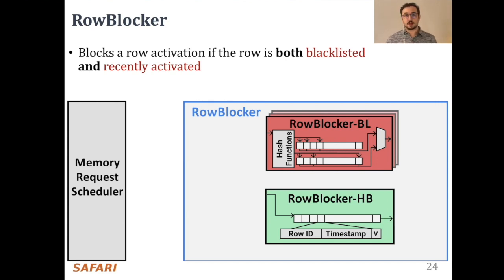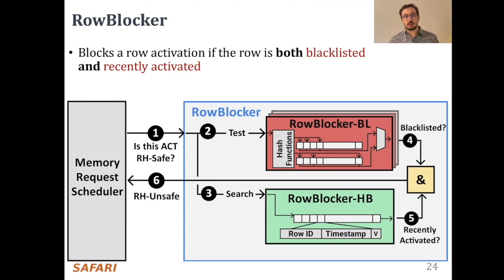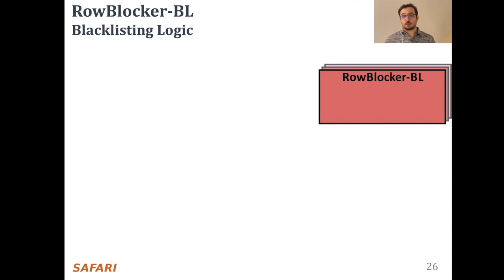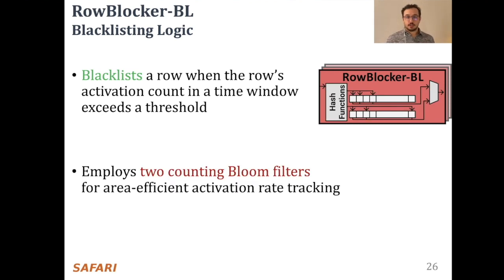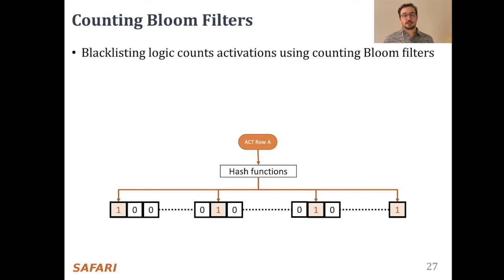This slide explains how Row Blocker operates at a high level. First, the memory request scheduler queries Row Blocker with an 'is the row activation row hammer safe?' query before performing the row activation. Row Blocker simultaneously checks both components. If a row is blacklisted and recently activated, activating this row can be unsafe at this moment; therefore the row activation is blocked, and meanwhile other requests in the request queue can be serviced. When the memory request scheduler issues a row activation, both components are updated. Row Blocker BL, the blacklisting logic, tracks row activation rates and blacklists a row when its activation count in a time window exceeds the threshold. To do this in an area-efficient way, it employs two counting bloom filters — essentially an array of counters addressed by hashed identifiers. When a row A is activated, its row ID is provided to a set of hash functions that evaluate a set of indices to the counter array, each of which is incremented.